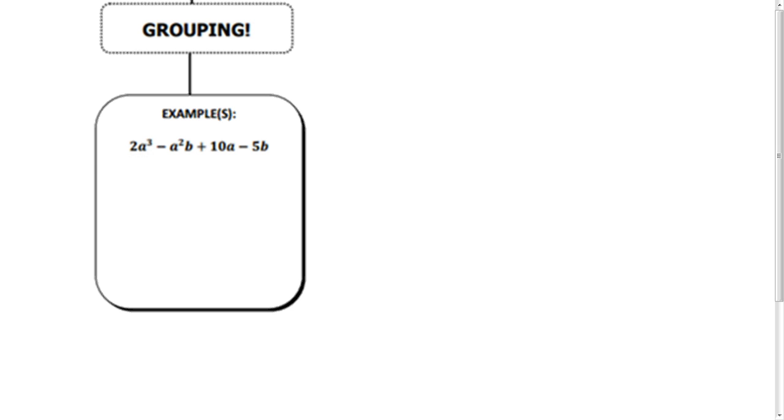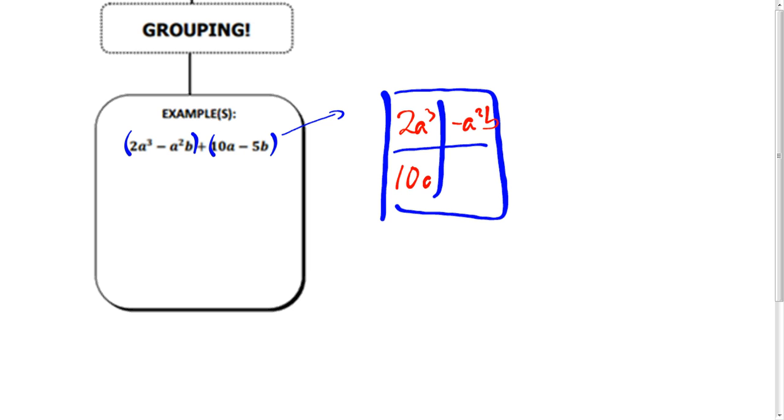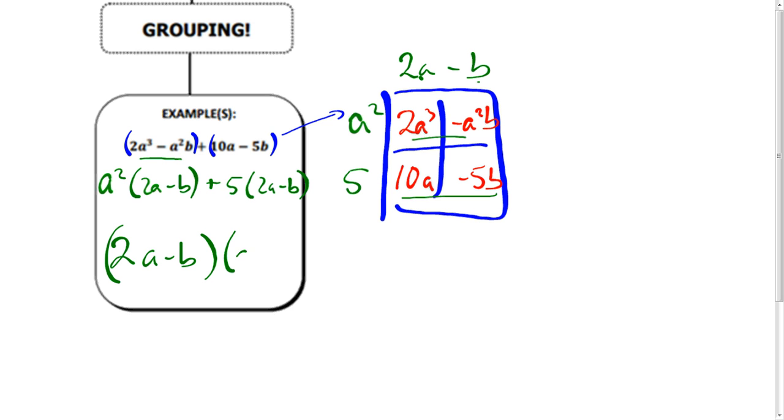And then grouping. This is the one that we did first. If you're grouping, you've got to have two in each. So 2a cubed minus a squared b, 10a minus 5b. What's in common between these two terms? I can take out an a squared, leftovers 2a minus b. Here I can take out a 5, I get 2a minus b. And then you pull out the common term.